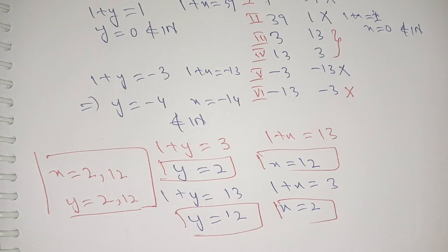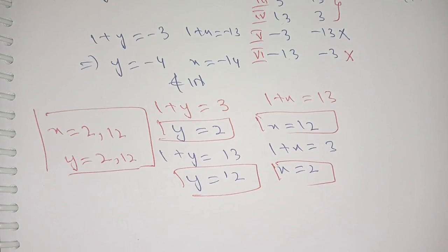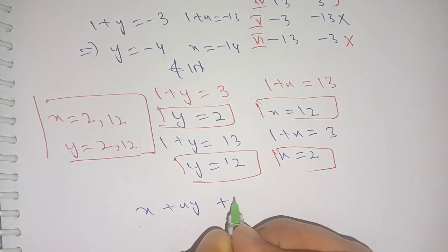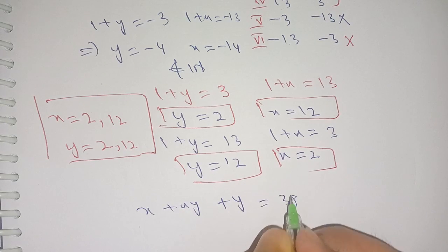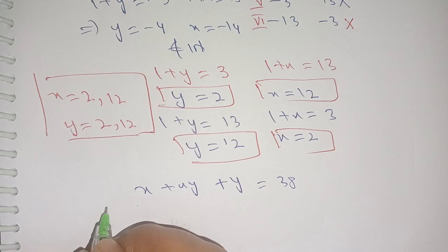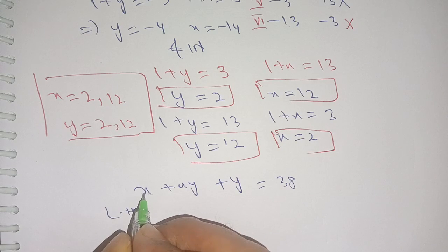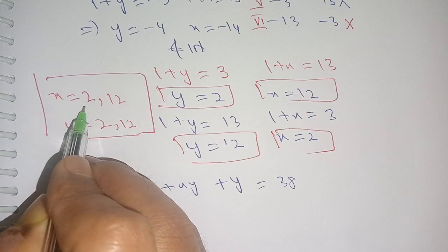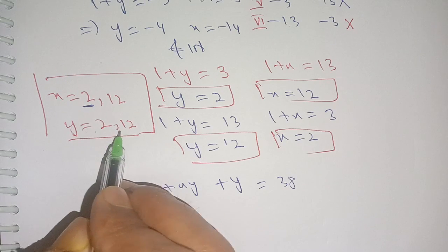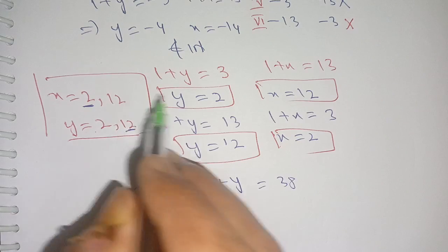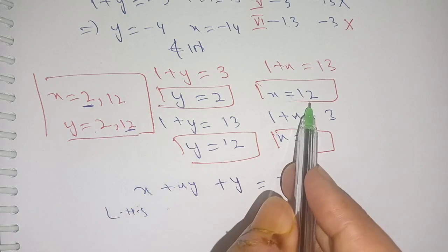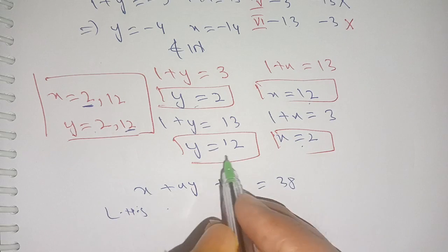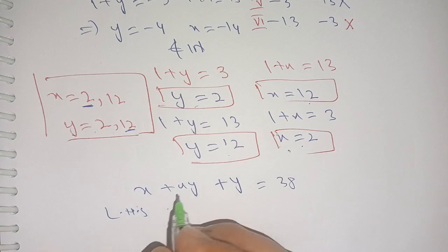Now let us substitute the values back into the given equation to verify. Our equation is x plus xy plus y is equal to 38. Taking the left-hand side, when x is equal to 2 and y is equal to 12: